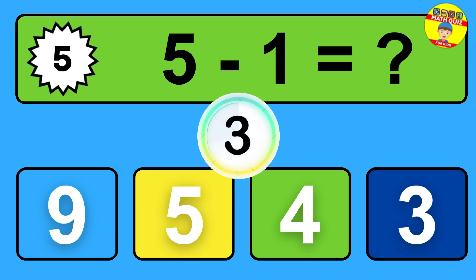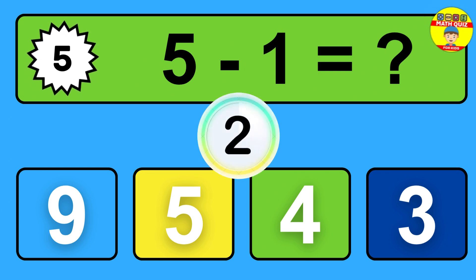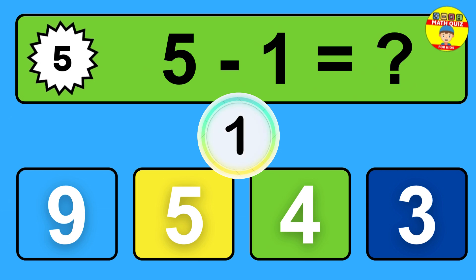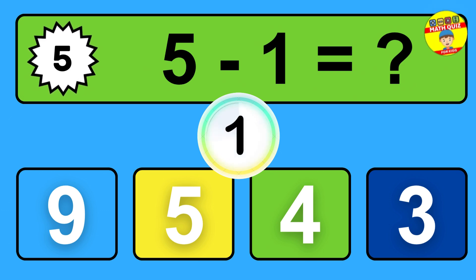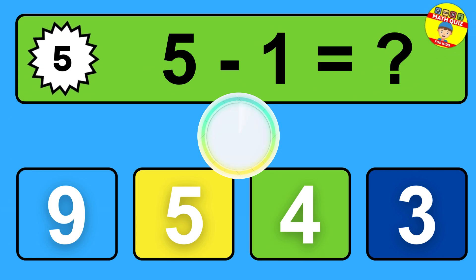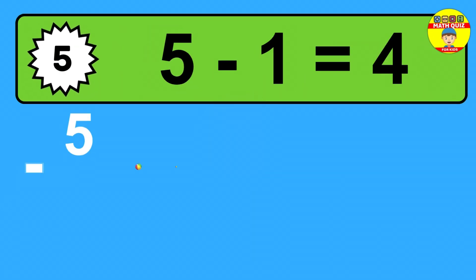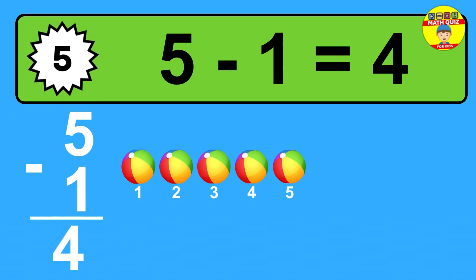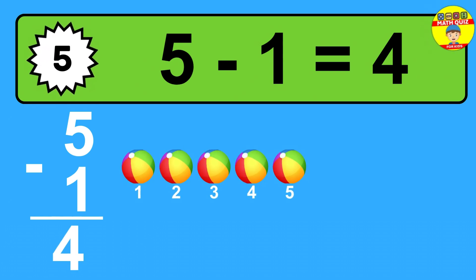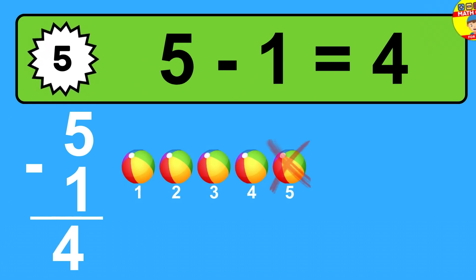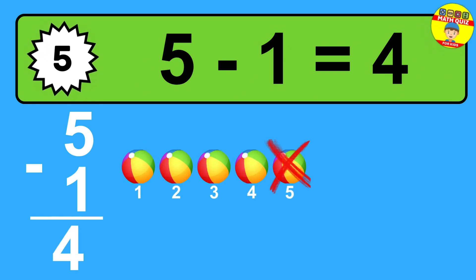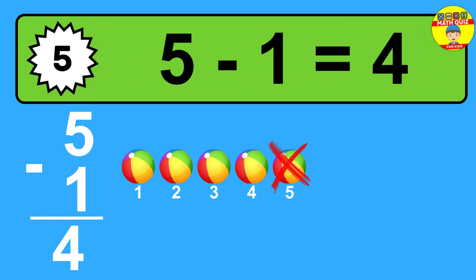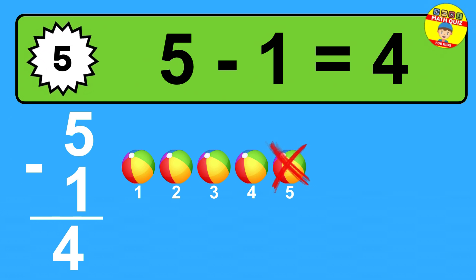Question five: five minus one equals what? The answer is five minus one is four. Let's count it: one, two, three, four.